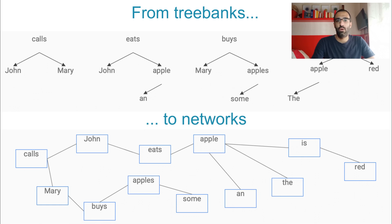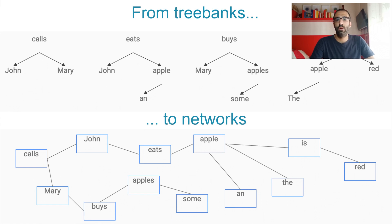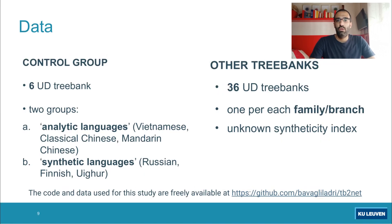Then we built a network in the following way. We extracted word lists from the treebank, and for each pair of words, we checked whether they were connected in at least one sentence or not. If they were, then the nodes in the network resulted to be connected, otherwise not. We divided UD treebanks into two groups.